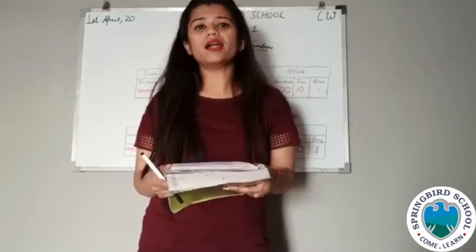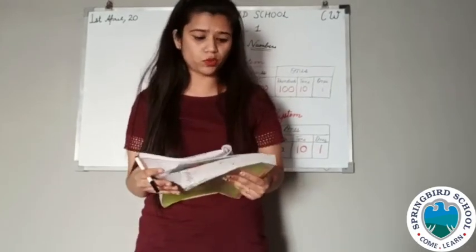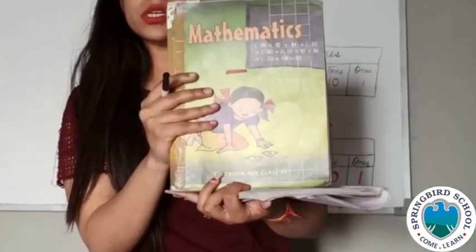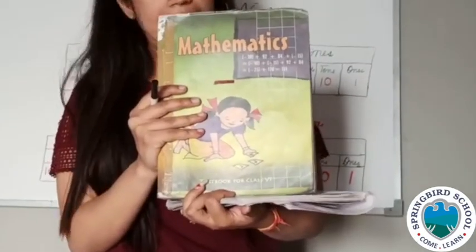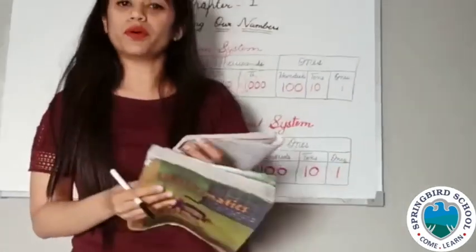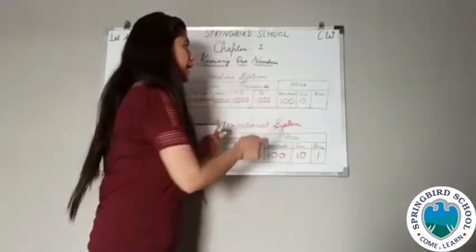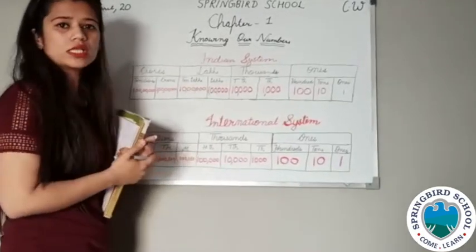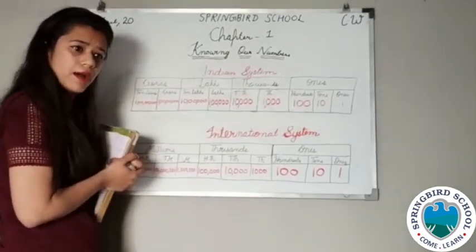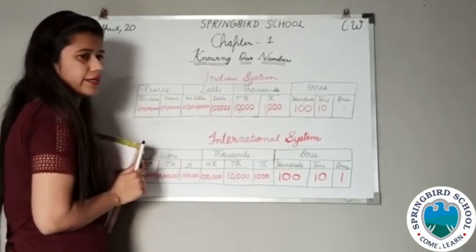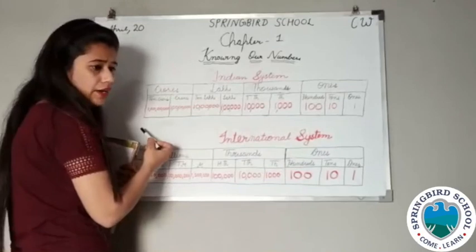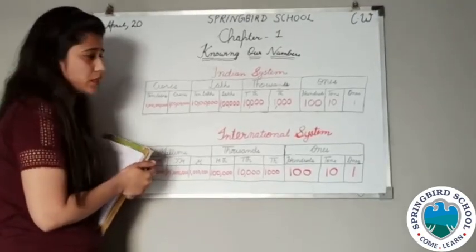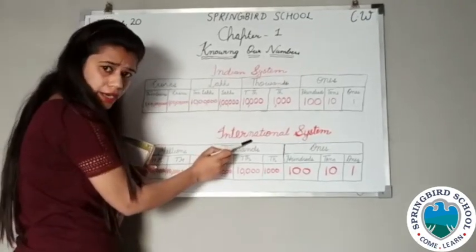Firstly we will start with the introduction of your maths book. Your maths book is this — it is Mathematics, published by NCERT. In your book, the first chapter is Knowing Our Numbers. By the name of the chapter you can tell that you will study about numbers. In numbers, there are two types of systems: the Indian system and the international system.